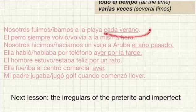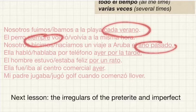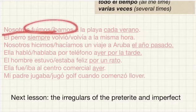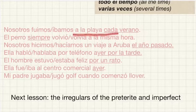So here are a few examples of whether you're going to use the imperfect or the preterite tense, depending on the key words we just went over. So firstly, 'nosotros' — and then we're going to choose one verb — 'a la playa cada verano.'